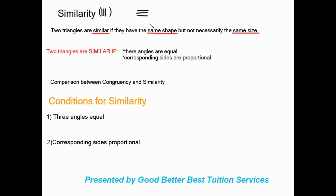Similarity: two triangles are similar if they have the same shape but not necessarily the same size. Two triangles are similar if their angles are equal and corresponding sides are proportional. As a comparison: if you put your two hands palm to palm, your hands are congruent because they are exactly equal. But if you put your hand against your little brother or sister's hand, your hands are similar — not the same size but proportional to one another.